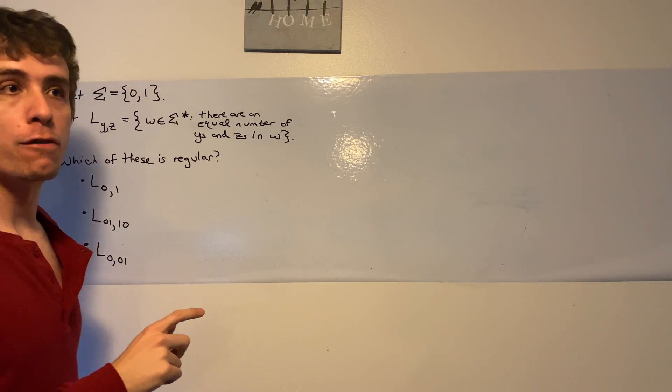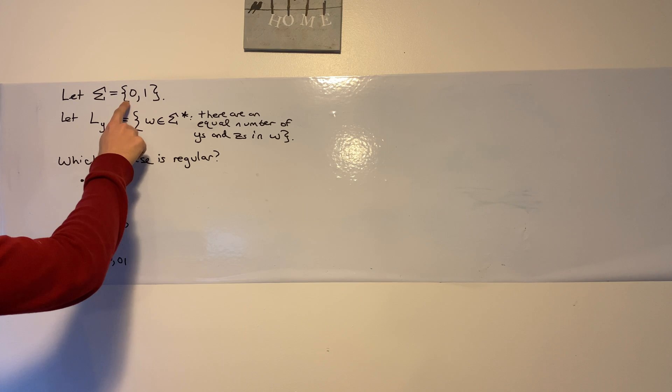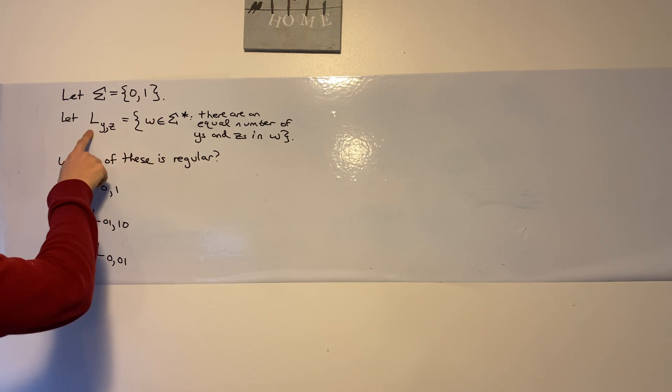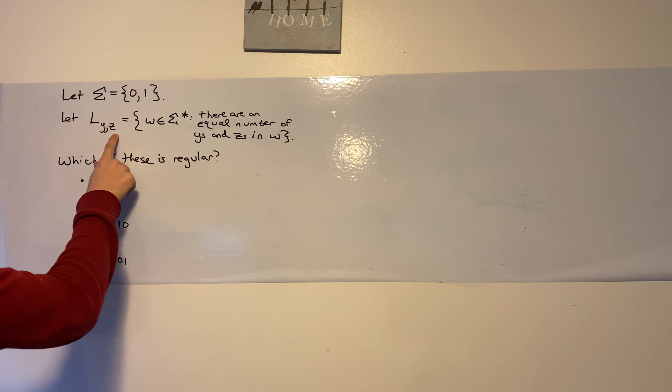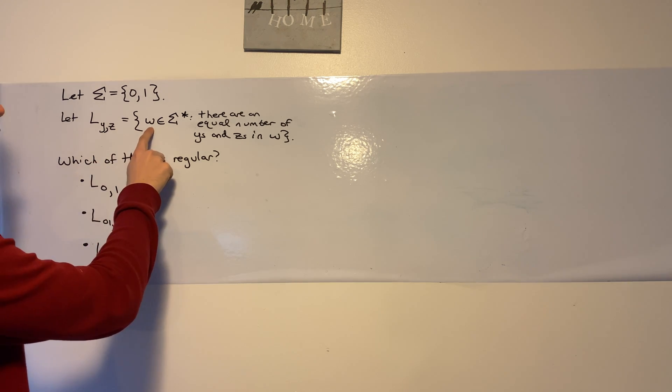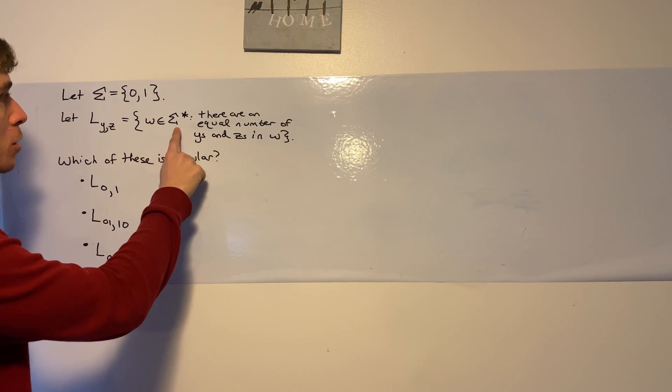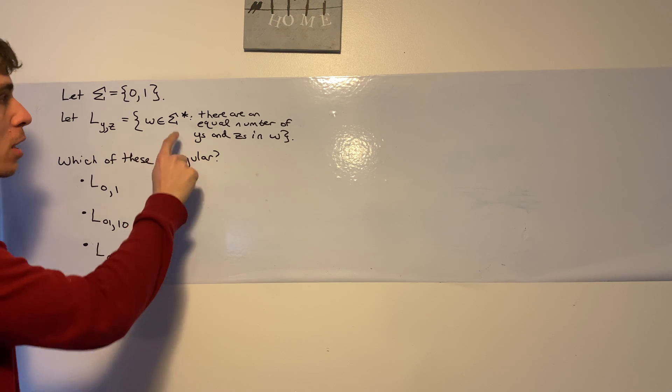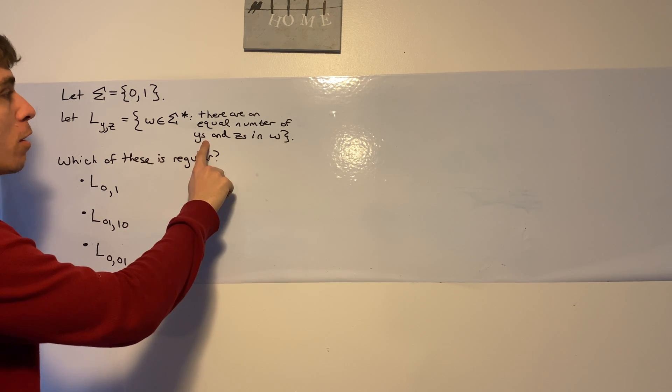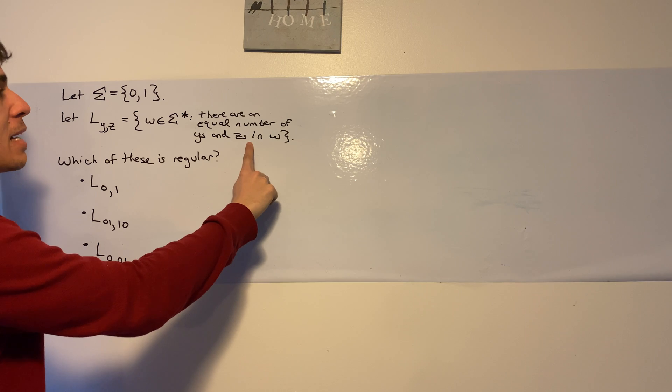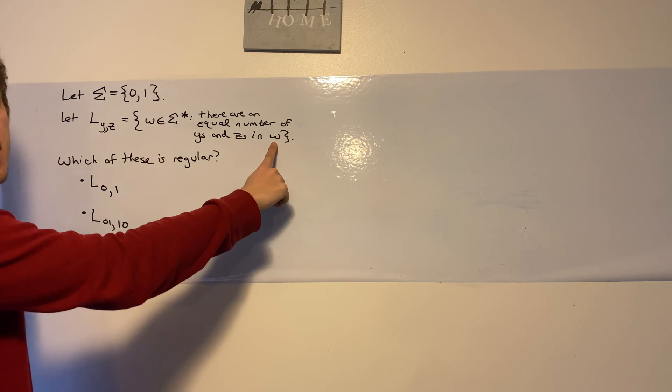Here we have the alphabet sigma equaling 0, 1, and the language with subscript y and z. I'm going to define it as the set of all strings in sigma star such that there are an equal number of y's and z's in that string.